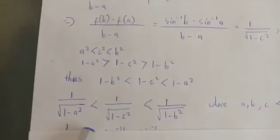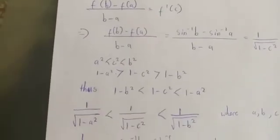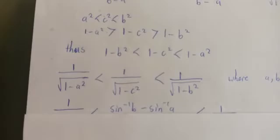Taking reciprocals and square roots reverses the inequality, giving us 1/√(1−a²) < 1/√(1−c²) < 1/√(1−b²). This is mathematically valid since a < c < b.